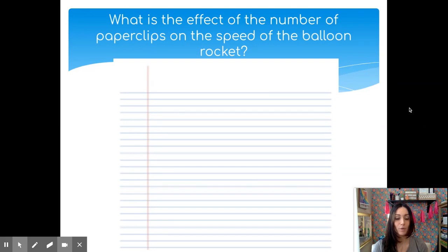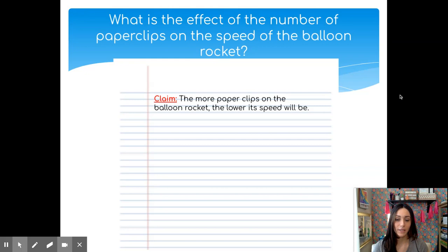Now let's go ahead and look at what my claim should look like for our balloon rocket example. So remember, our first step is to make sure that we're clear on the question that's being asked. Here our question is, what is the effect of the number of paper clips on the speed of the balloon rocket? In this case, taking a look at my data, I should have been able to conclude that the more paper clips that were placed on the balloon rocket, the lower or slower its speed. So my claim should look something like this. The more paper clips on the balloon rocket, the lower its speed will be. It is a direct one sentence answer to the question that's being asked.